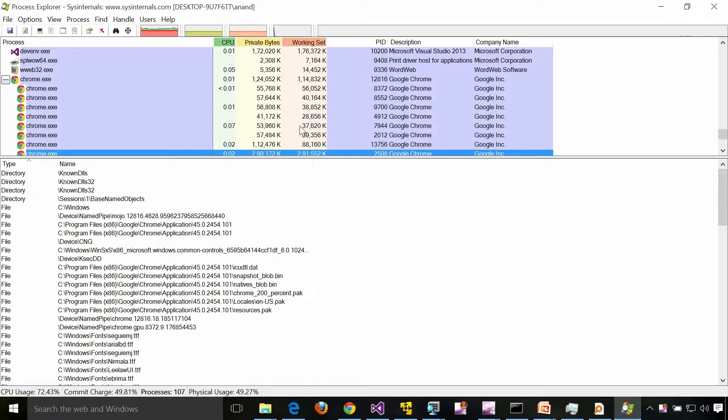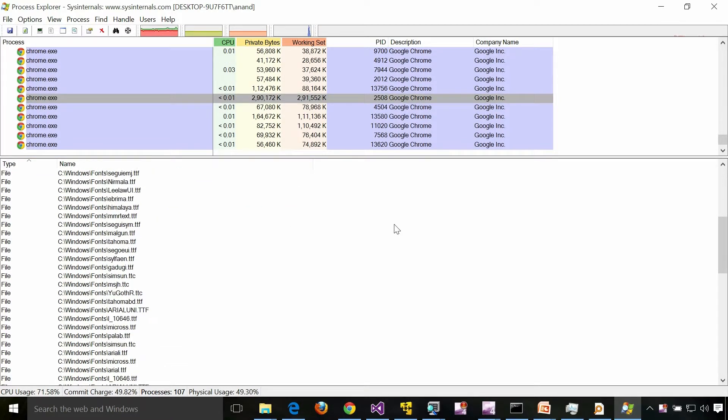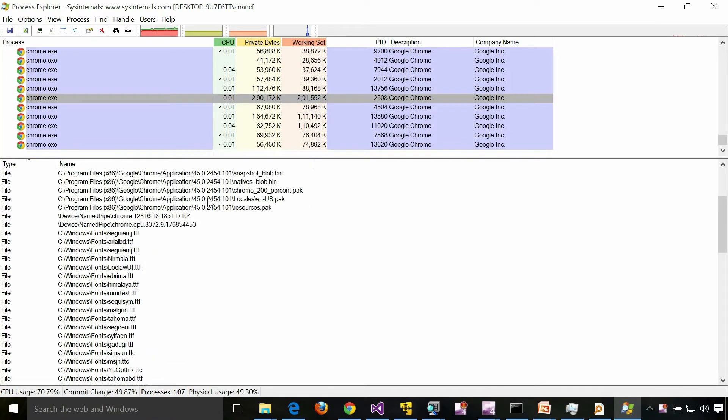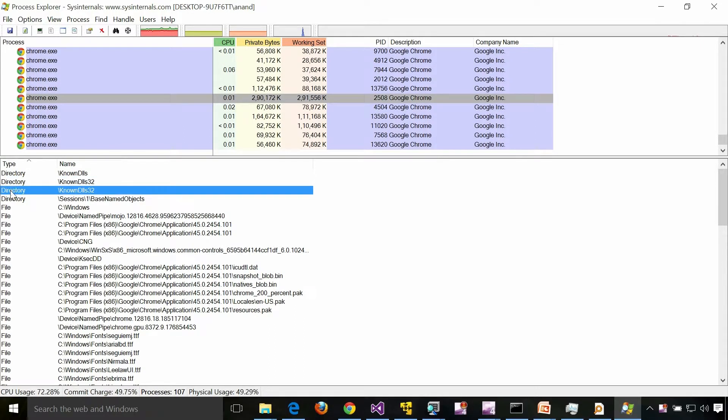Currently I'm not running Process Explorer as administrator so I won't be able to see those handles. I have a couple of Chrome instances running here. If I look I can see the handles it has open, different types of handles. This is a directory, this directory is not the file system directory but it is the object namespace directory.